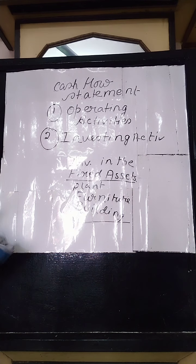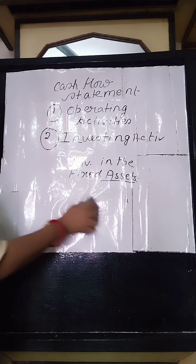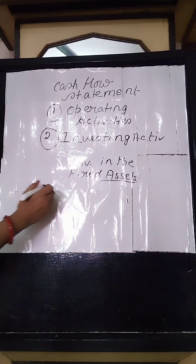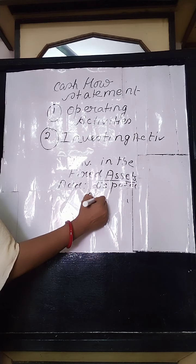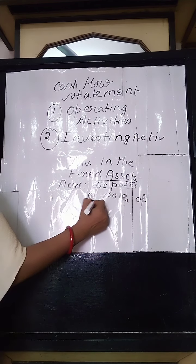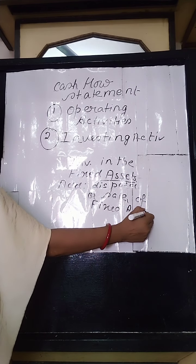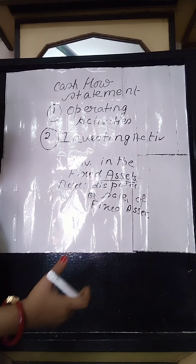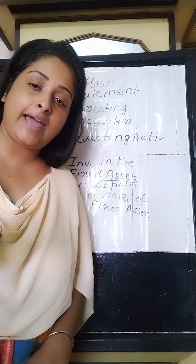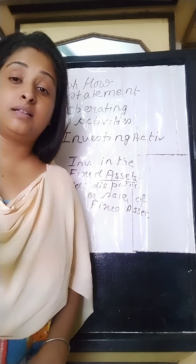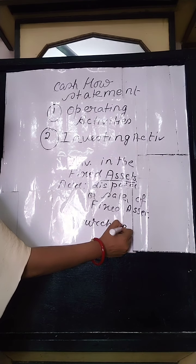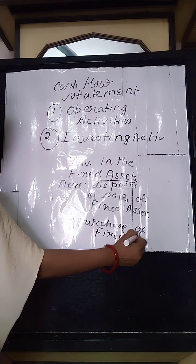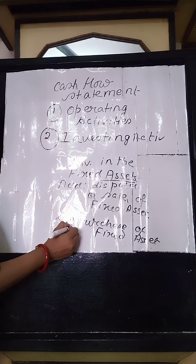If there is any sale or disposal of a fixed asset — whether it is plant and machinery, furniture, equipment, or land and building — then we will always add it in the investing activities. On the other side, any purchase of any fixed asset will be deducted in the investing activities.